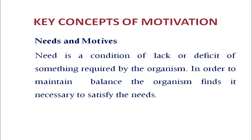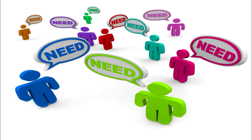The first concept is needs and motives. Need is a condition of lack or deficit of something required by the organism. In order to maintain balance, the organism finds it necessary to satisfy the needs. The need for food or water is a physiological need which arises out of lack or deficit of food or water in the organism. Every individual has their own needs depending on their environmental factors. The need for contact with other persons is a social need.